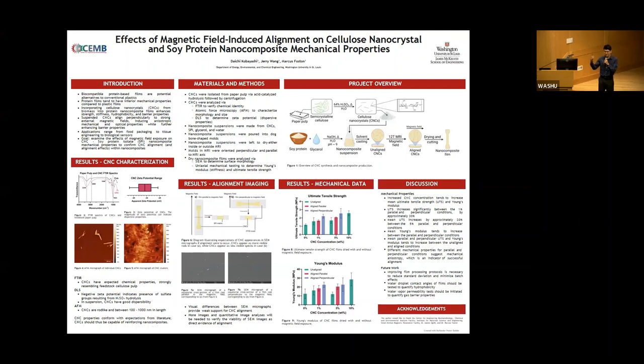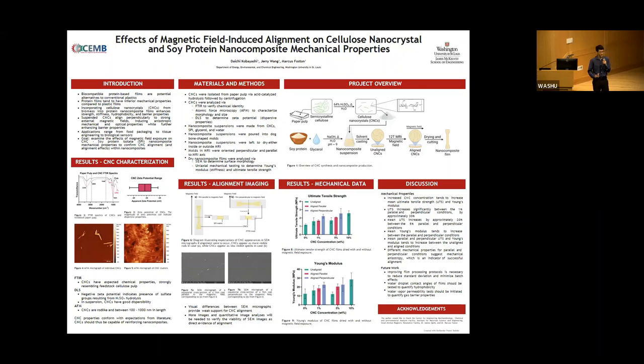If you incorporate cellulose nanocrystals into protein film matrices, you see enhanced mechanical properties — enhanced strength, stiffness, and enhanced water resistance. These cellulose nanocrystals come from the cell walls of plants, specifically when you hydrolyze the amorphous regions of plant cellulose, leaving behind only the crystalline regions. They're on the order of strength and stiffness of Kevlar and steel. A nanocomposite combines the weaker protein matrix with the stronger cellulose nanocrystal filler, leading to overall reinforcement.